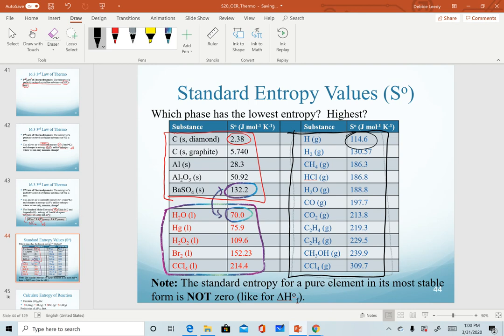Another very important note down here. The standard entropy for a pure element in its most stable form is not zero. So recognize that elements like aluminum in its standard state still has an entropy value. So enthalpy of formation values for substances in their elemental form, those are zero. For entropies, that is not the case.